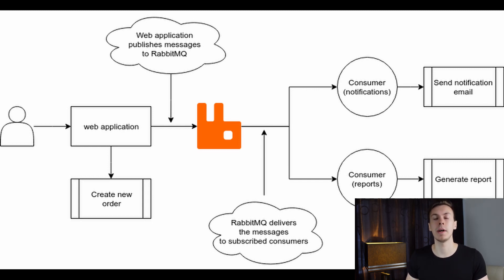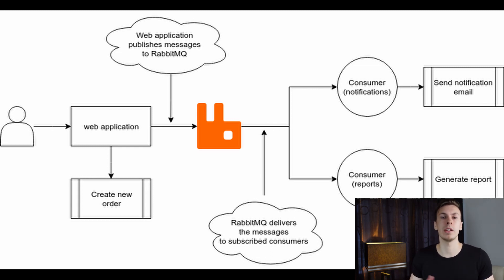As you can see, we now have four separate processes — that's what I mean by distributed systems. We can have one server running the web application, another running the message broker, and one or two more running the consumers. This flow is much better than before because our application is now much faster — it only creates a new row in the table and publishes two messages to the broker, which is fast. The user gets a response from the server very quickly.